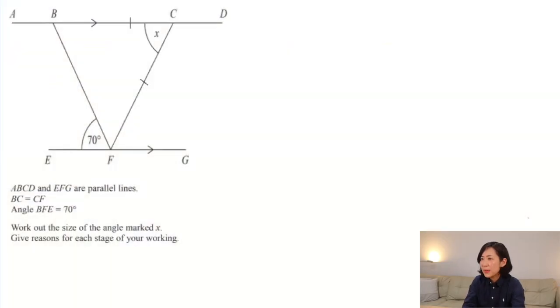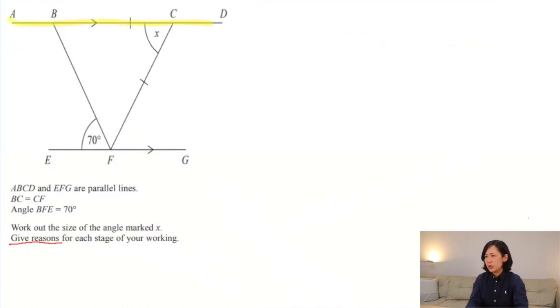Welcome back. This is our final lesson for angles in parallel lines, so let's have a look at the more challenging questions together. Let's get started. We've got a pair of parallel lines and we can also see a triangle. Let's begin by identifying our pair of parallel lines and giving a reason. Between them we can see two lines going straight.